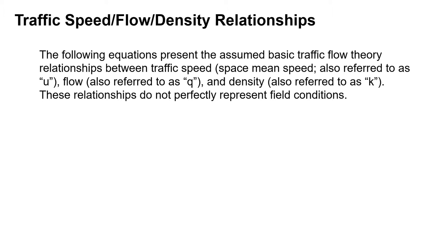From traffic flow theory, we have some assumed relationships between the traffic speed — specifically the space mean speed, which is known as U — the flow, which is referred to as Q, and the density, which is known as K. These relationships don't perfectly represent field conditions, but they are fairly representative and are the common assumptions for speed, flow, and density in traffic engineering and traffic flow theory.